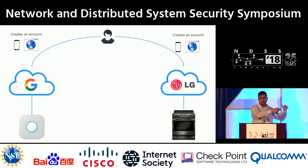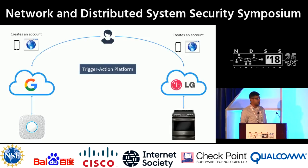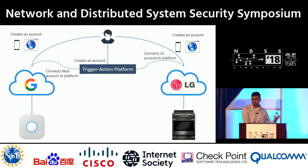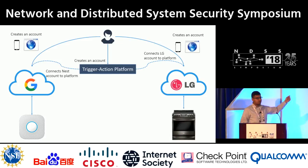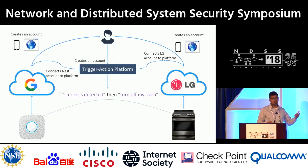But this is still in a silo. The whole internet of things is about creating connections between devices so that you can gain interesting automations. This is where the notion of a trigger action platform comes in — it basically breaks down these silos and enables interconnections between devices. As a user, you create an account on a trigger action platform and connect these cloud services to it. The platform then gives you the ability to write simple trigger action rules of the form: if condition, then action.